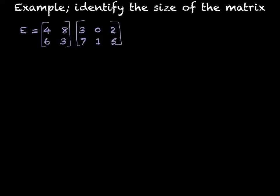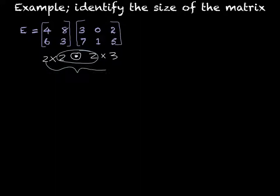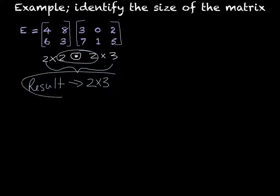This next example, we have E equals the matrix 4 8 6 3 times 3 0 2 7 1 5. So this is a two by two, and we're trying to multiply that times a two row by three column. So if we want to actually identify the size, we look at the two inside ones — they are the same — so our resulting matrix will be whatever is left, which is a two by three.